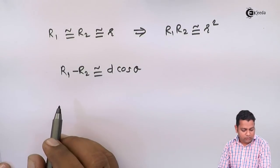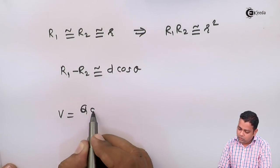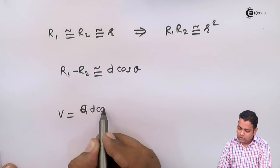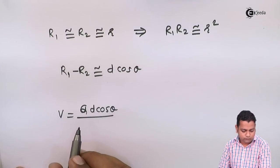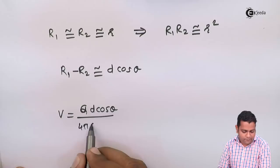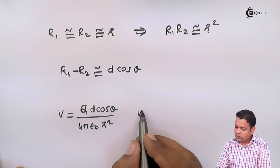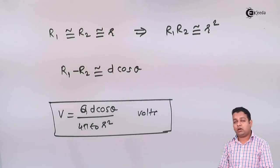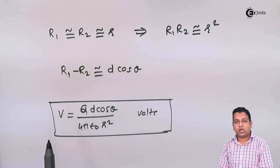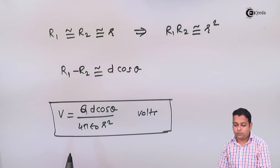Using these approximations, we can generalize: V = (Q·d·cos θ)/(4πε₀·r²), in volts. This is the generalized expression for potential at field point P due to the pair of charges — the electric dipole.